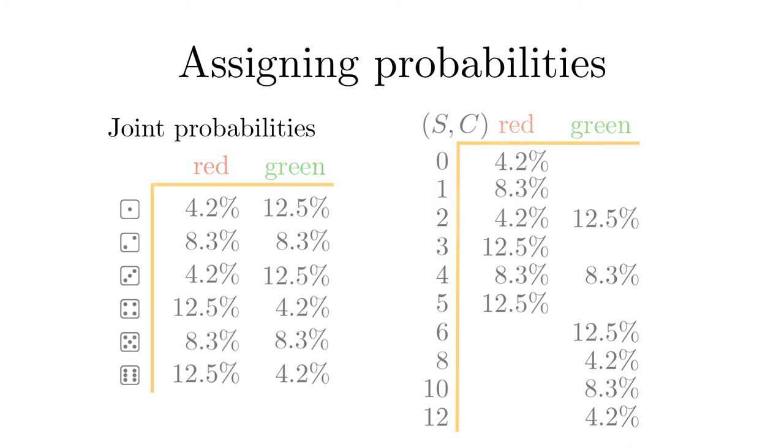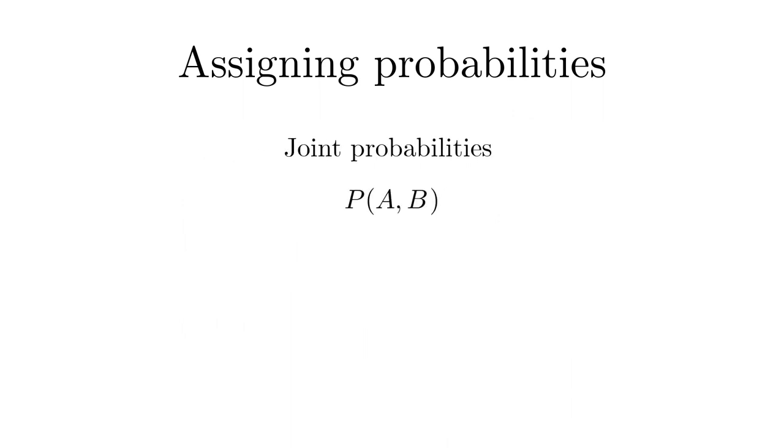Needless to say, the joint probabilities can also be defined for more than just two propositions or variables, like p of a, b, and c, and so on. Now that we know the joint probabilities, there are different aspects of the inference problem that we can address. In case of the strange die, we could ask the question, what is the probability for a particular score, for example six points, given the front side is green.